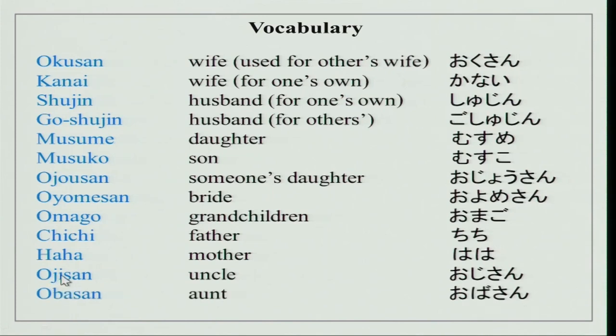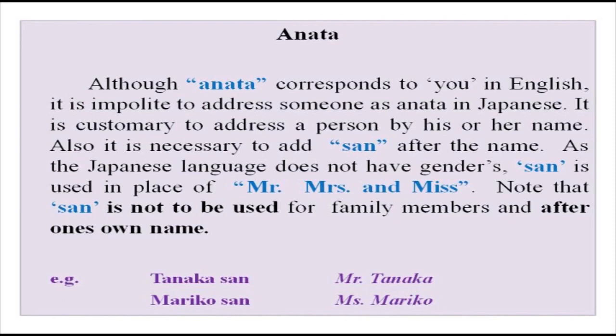We did ojisan which is grandfather and obasan which is grandmother. So please note — this is uncle and aunt. The i is not elongated here, and the a is also not elongated in aunt. Also, we have done the word anata a number of times in our previous lessons. Anata corresponds to 'you' in English, and it is impolite to address someone as anata in Japanese. It is customary to address a person by their first name or surname. Also, san is to be used after someone's name, but not after one's own name, and not after your own family members' names.